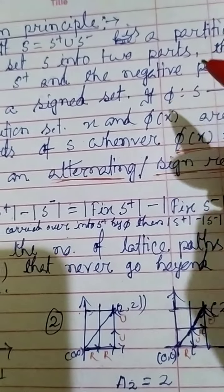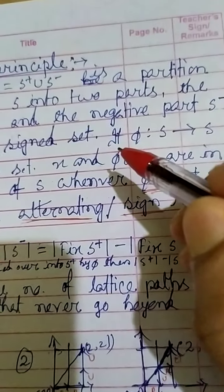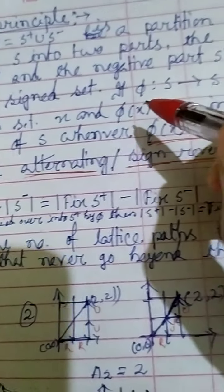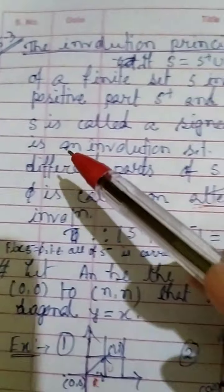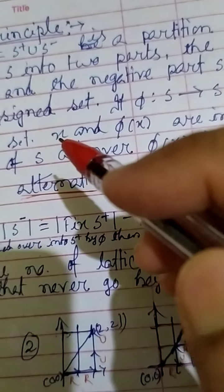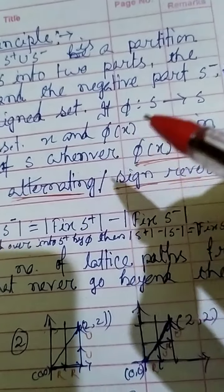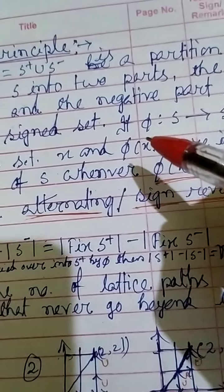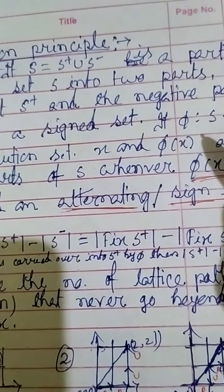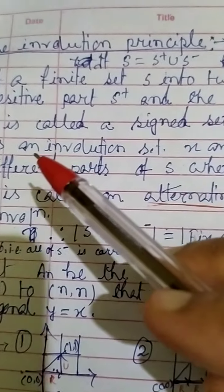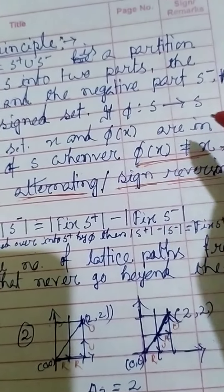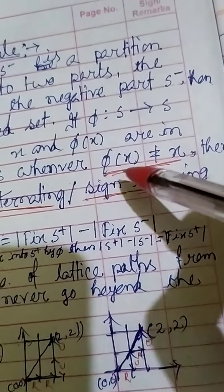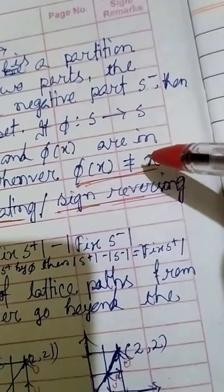Next we need the concept of involution. If φ from S to S is an involution, that means φ-squared equals the identity mapping I. This is the definition of involution. It is an involution such that x and φ(x) are in different parts of S whenever φ(x) is not equal to x.